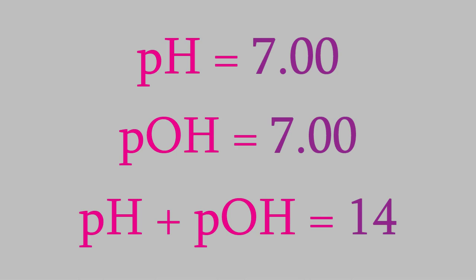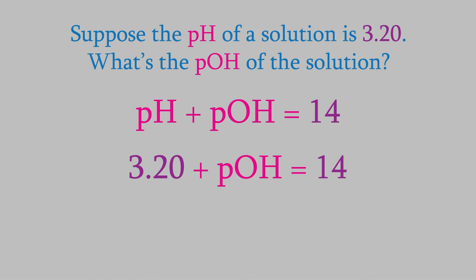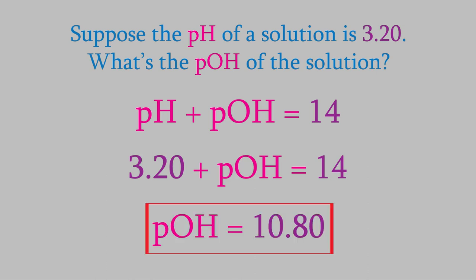So, for example, if we had an aqueous solution of acetic acid with a pH of 3.20, we could find out its pOH. Since the pH and pOH must add up to 14, we know that the pOH is 10.80.